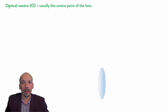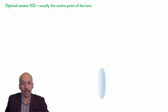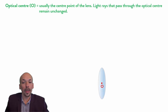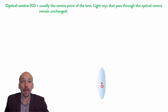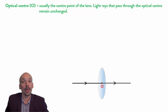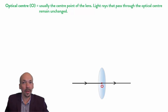There are a few things you need to know about lenses. First of all, there's an optical center which is marked with a capital O. This is usually the center point of the lens. When light rays hit this point, they will pass through it without being bent, so they remain unchanged. All light rays going through the optical center will just keep on going as if they were not refracted.